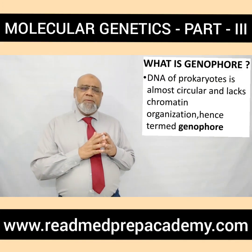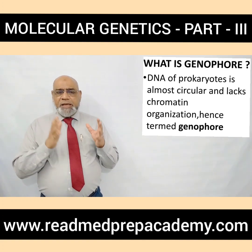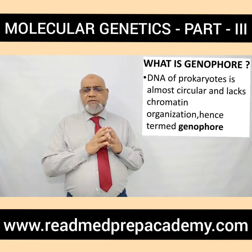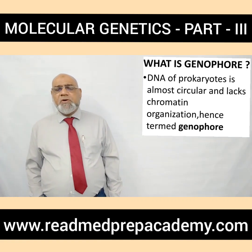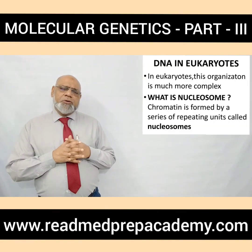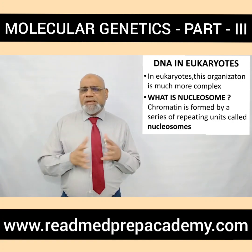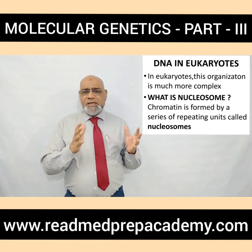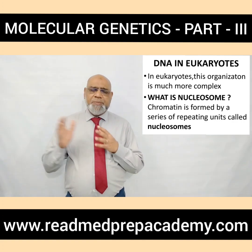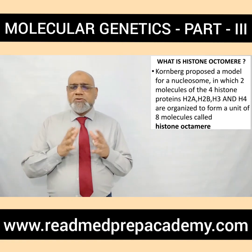These loops are usually circular. The DNA of prokaryotes is almost circular and lacks chromatin; the organization of such a structure is called the genophore. The plasmid is the circular DNA, and the genophore is present in the nucleoid. In eukaryotes, the organization is very complex. Chromatin is formed by a series of repeating units called nucleosomes. Kornberg proposed a model for the nucleosome in which two molecules each of four histone proteins form a unit.